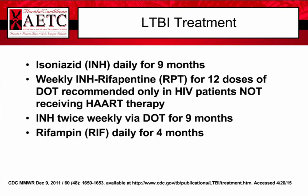Treatment for latent, inactive, or sleeping tuberculosis: First-line is isoniazid daily for nine months. Another option is a combination of INH with rifapentin for 12 weekly doses as directly observed therapy, but only for HIV-negative patients or HIV patients not on ART due to drug interactions. Third-line is isoniazid twice weekly via directly observed therapy for nine months. If patients have reactions to isoniazid — skin reactions, rashes, or elevated liver function tests — the fourth-line therapy is rifampin daily for four months.